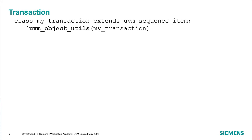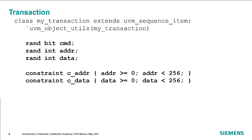Notice there's no semicolon at the end of that macro line. The transaction has a set of data fields or attributes depending on the protocol being modeled. Typically, we define each field as RAND so it will get randomized. We can also define a set of base constraints to specify reasonable values for the fields, which will be used by default when generating random transactions. You can turn constraints on and off in SystemVerilog.